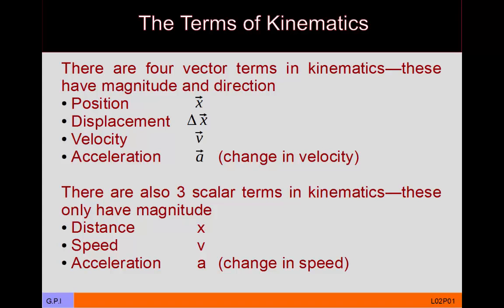These are vector terms because they have both a magnitude and a direction. Magnitude means how much, or what is the size of this vector. Direction means can you point to where an object is. There are also scalar equivalents: distance is the scalar equivalent to displacement, speed is the scalar equivalent to velocity, and acceleration exists in both vector and scalar forms — telling how velocity or speed is changing respectively.